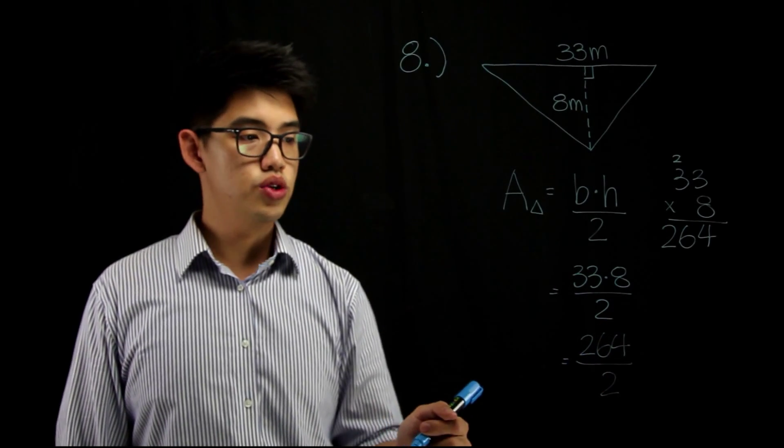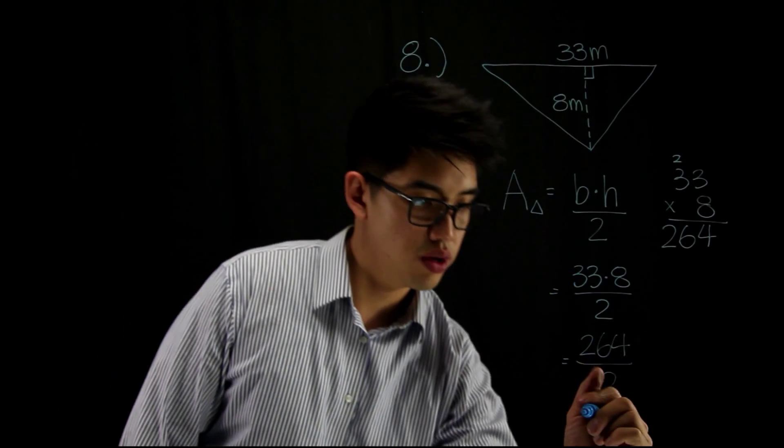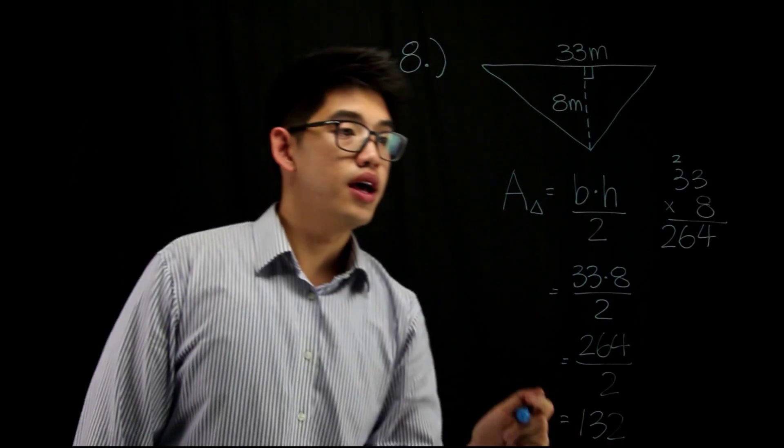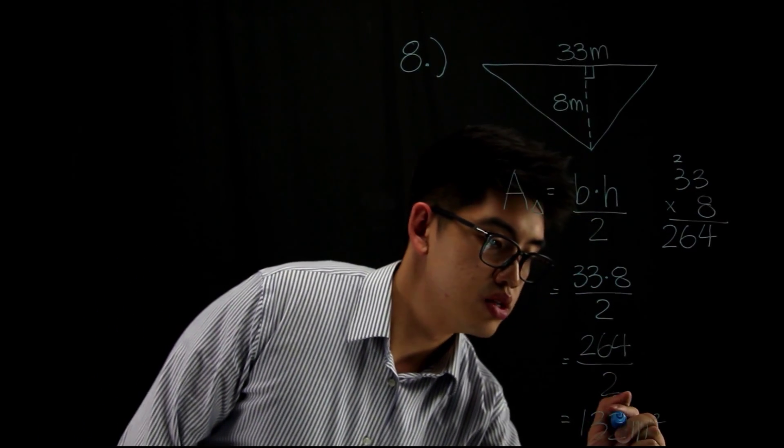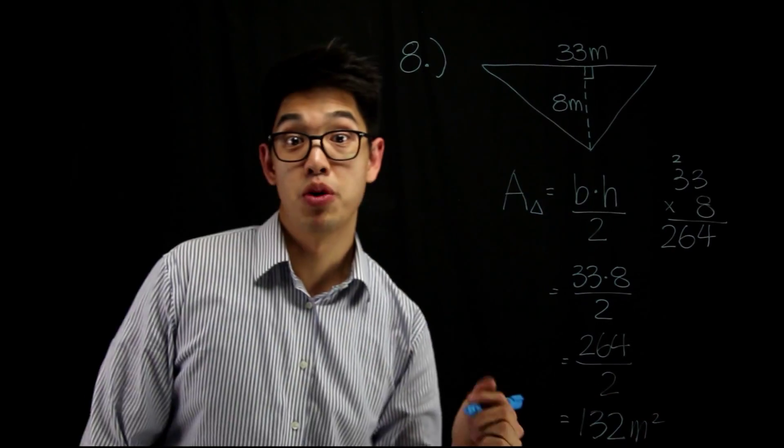264 divided by 2. Oh, that's 132. Okay. 132. And since this is in meters, we know that's going to be 132 meters squared. We're done.